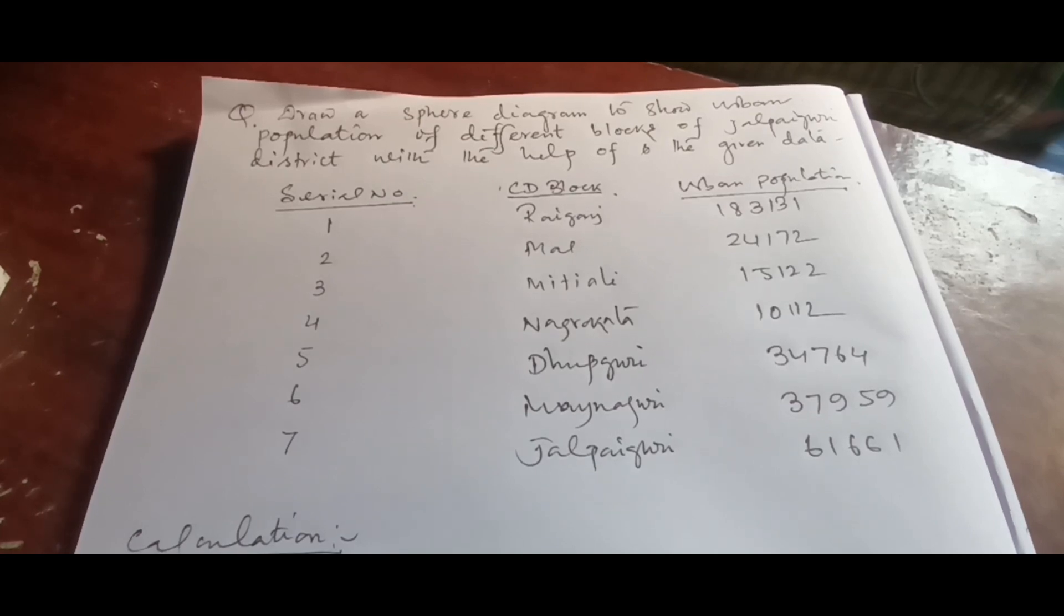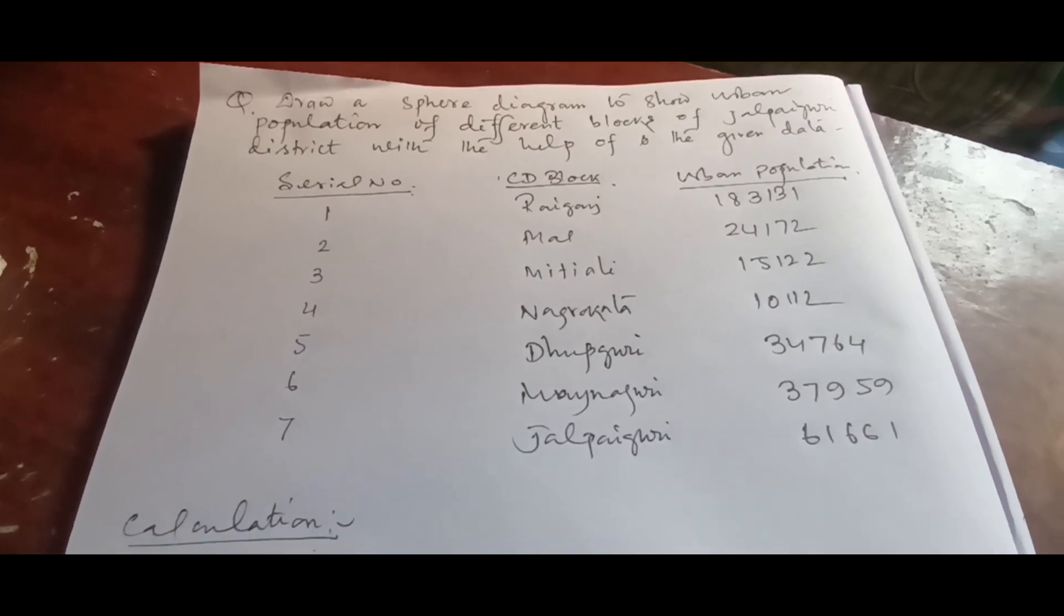In the data section we see serial number, then CD blocks, followed by the urban population. What is the use of sphere diagrams? Sphere diagrams are drawn to show the urban population on the map, so it's a cartogram. Cartograms are used to represent geographical data. Let's find out the calculations for this.